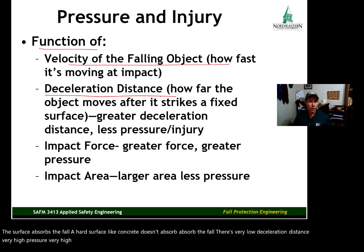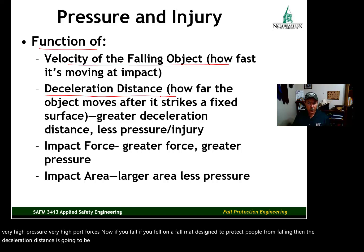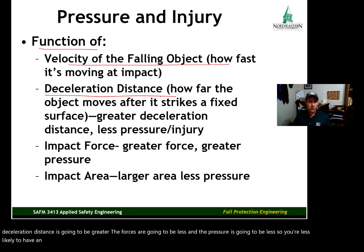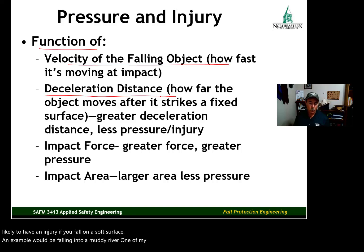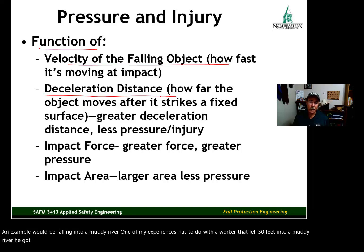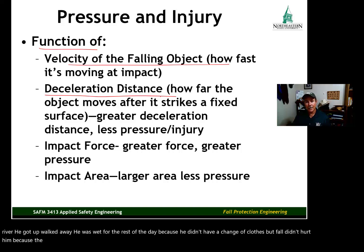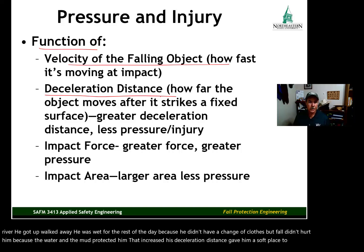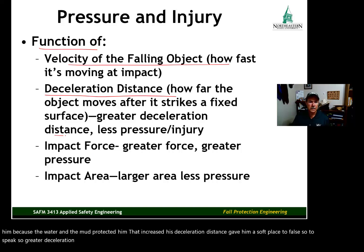If you fell on a fall mat designed to protect people from falling, the deceleration distance is going to be greater, the forces are going to be less, and the pressure is going to be less — so you're less likely to have an injury if you fall on a soft surface. An example would be falling into a muddy river. A worker fell 30 feet into a muddy river, got up, and walked away. He was wet for the rest of the day, but the fall didn't hurt him because the water and the mud protected him — that increased his deceleration distance. Greater deceleration distance, less pressure, less injury.